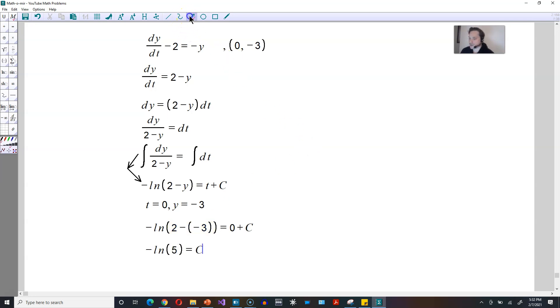Continuing, what you want to do now is you want to begin with this model right here, and then you can replace c now with negative ln of 5. You know what it is, so you're going to have the following then. Negative ln of (2 - y) is equal to t plus, well, minus ln of 5.